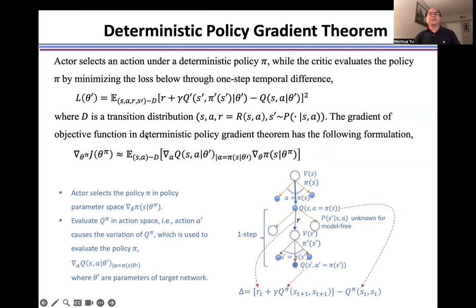In the actor-critic method, we use the actor to select action under the policy, while the critical function evaluates the policy Pi by minimizing the loss through a one-step temporal difference method. The idea is here. For example, from this state S, we use the deterministic policy, and we know exactly which action we select. And then how can we use the Q as the critical function to evaluate this policy Pi?